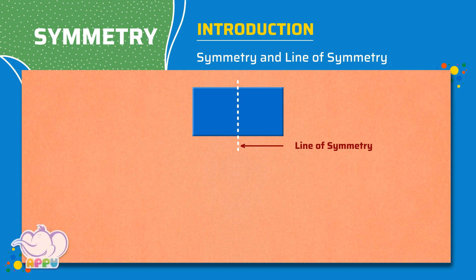Let's look at another example. This is a triangle. Let's fold this shape into half. Both the halves exactly match each other. This shape is said to be symmetrical. And the fold line is the line of symmetry.